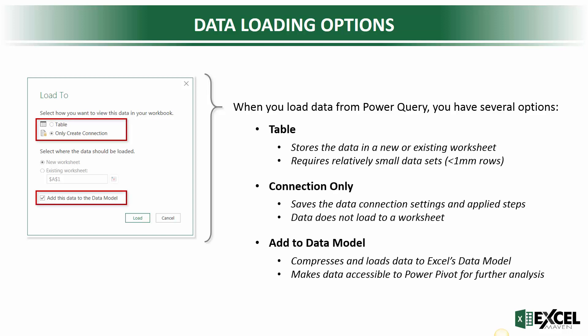You've got a few options here. The first set of options is Table versus Connection Only. The Table option is going to store that data into a new or an existing worksheet, and because you're dealing with a worksheet, you're also dealing with the size limitations of a worksheet — just about a million rows. Connection Only, on the other hand, which we're going to be using, saves the data connection settings and the applied steps in Power Query, and the data doesn't actually load to a worksheet itself.